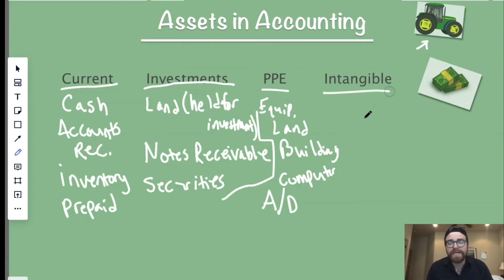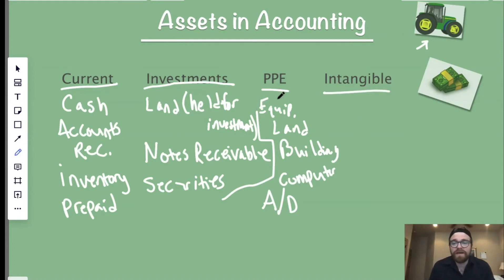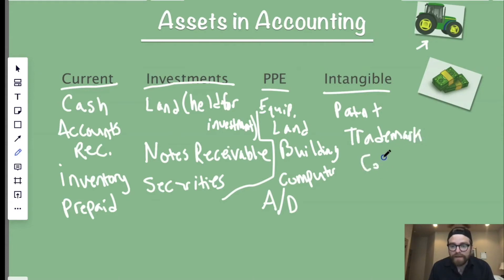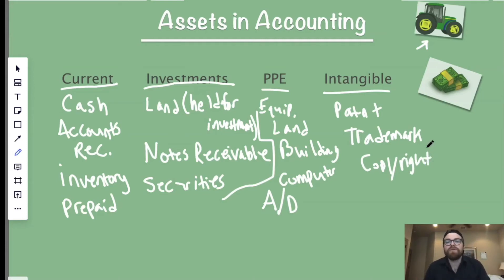And lastly we have intangible assets — assets that you can't physically hold. Good examples are patents, trademarks, and copyrights. These are things that companies hold that are assets on the balance sheet, but they're not physical. You can't actually hold them, but they still hold a lot of value for that company. So those are the four main categories of assets on the balance sheet.